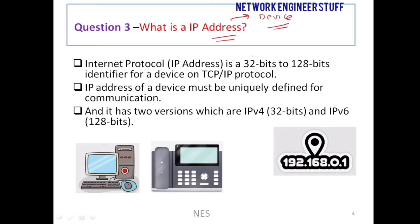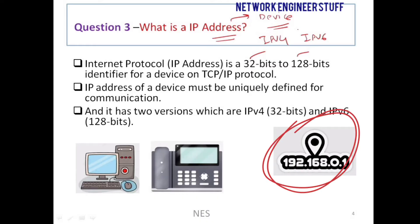An IP address can be a 32-bit or a 128-bit address depending on the version. IP addresses have two versions: IPv4 and IPv6. If it is an IPv4 address, it is 32 bits — for example, 192.168.0.1 is an IPv4 address. If it is an IPv6 address, it is 128 bits.